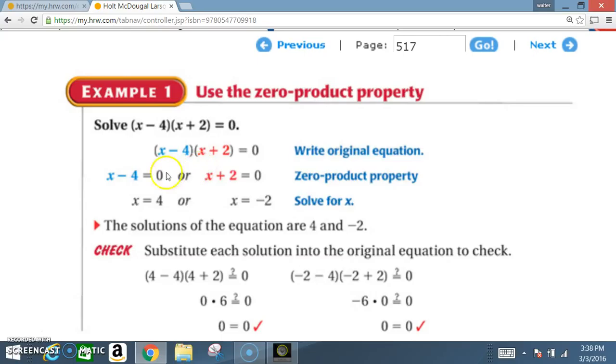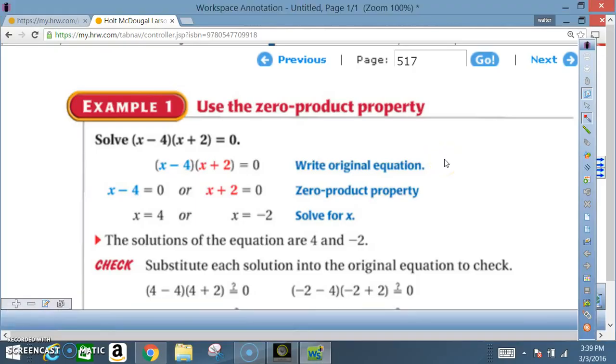Here we end up with a one-step equation, so x is going to equal 4. We add 4 here and plus 4 here. On this side we have x + 2 = 0 and we end up with x = -2. We subtract 2 here, minus 2 there. Once again, this would be a one-step equation.